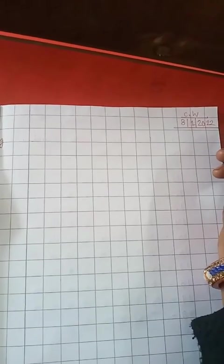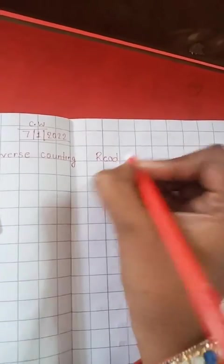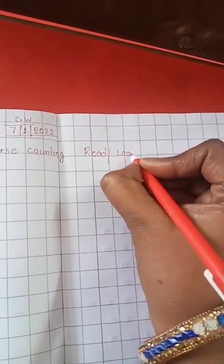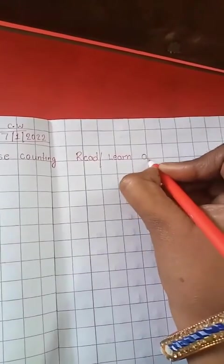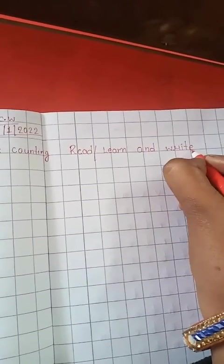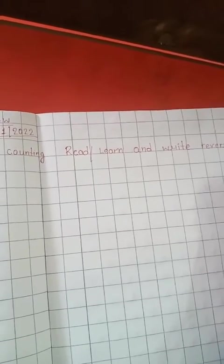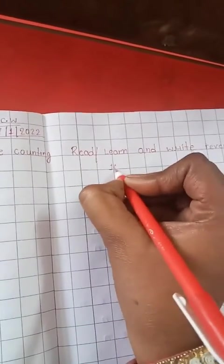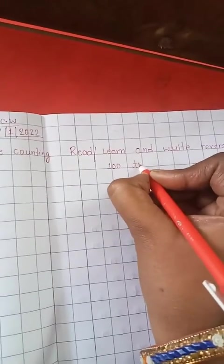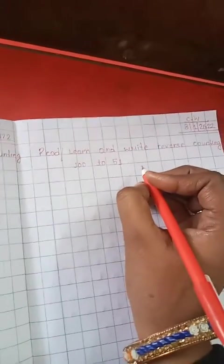First we write the heading. So write read, learn, and write, reverse counting, reverse counting 100 to 51. Ok student, our heading is complete.